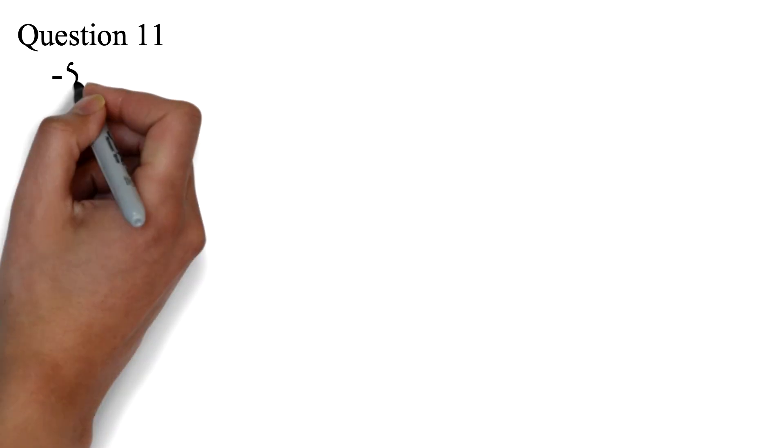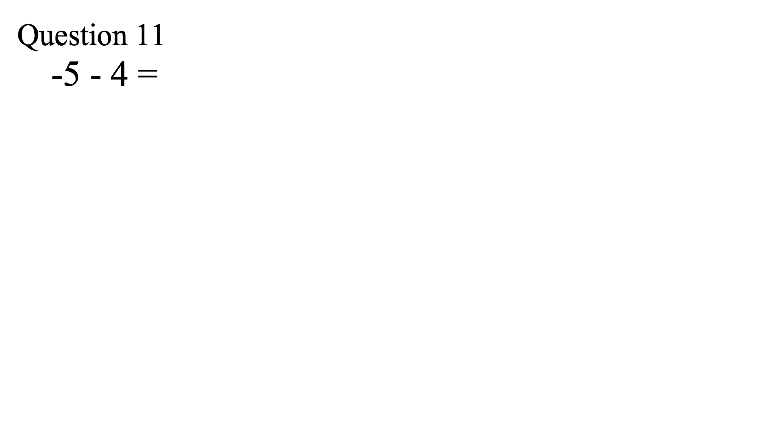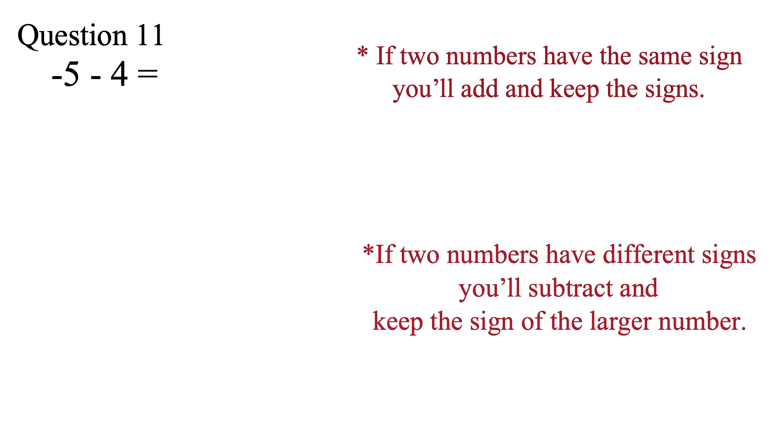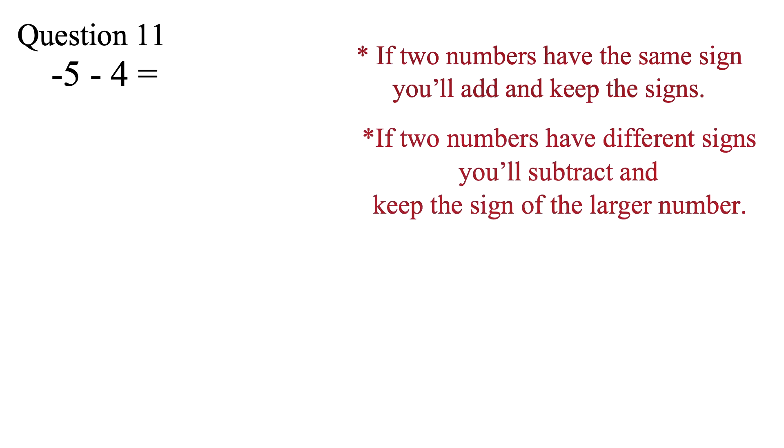Question 11. Negative 5 minus 4 equals. To solve questions like this, all you need to remember is that if two numbers have the same sign, you'll add and keep the signs. And if two numbers have different signs, you'll subtract and keep the sign of the larger number.